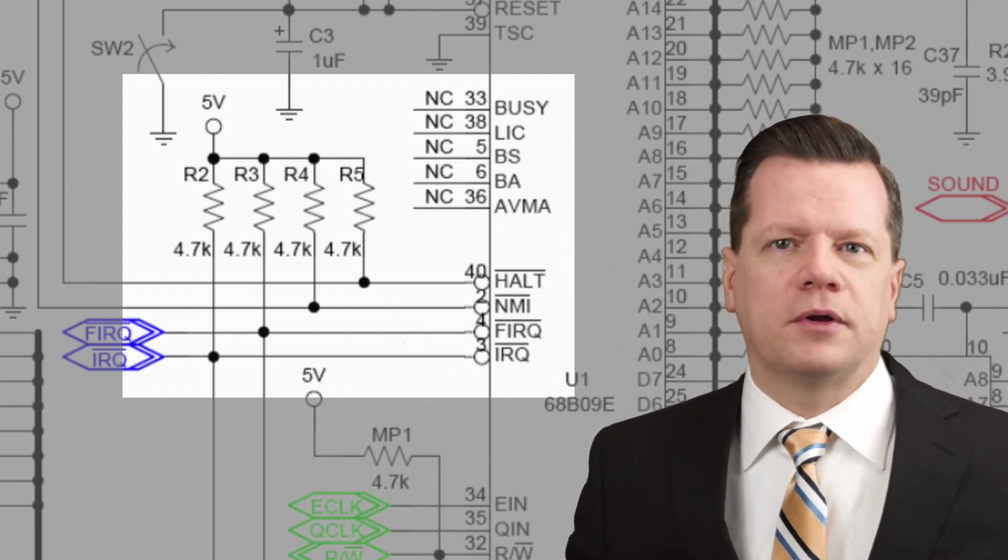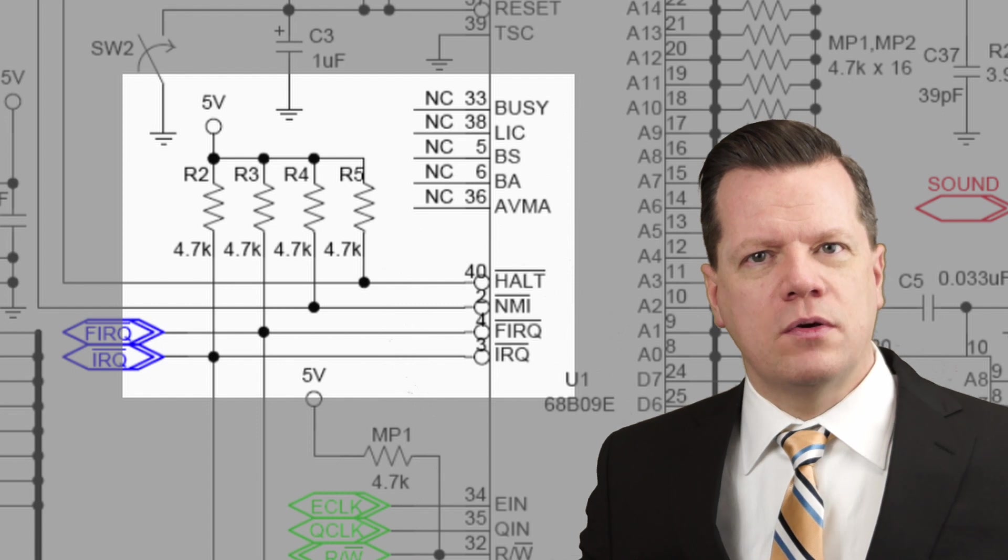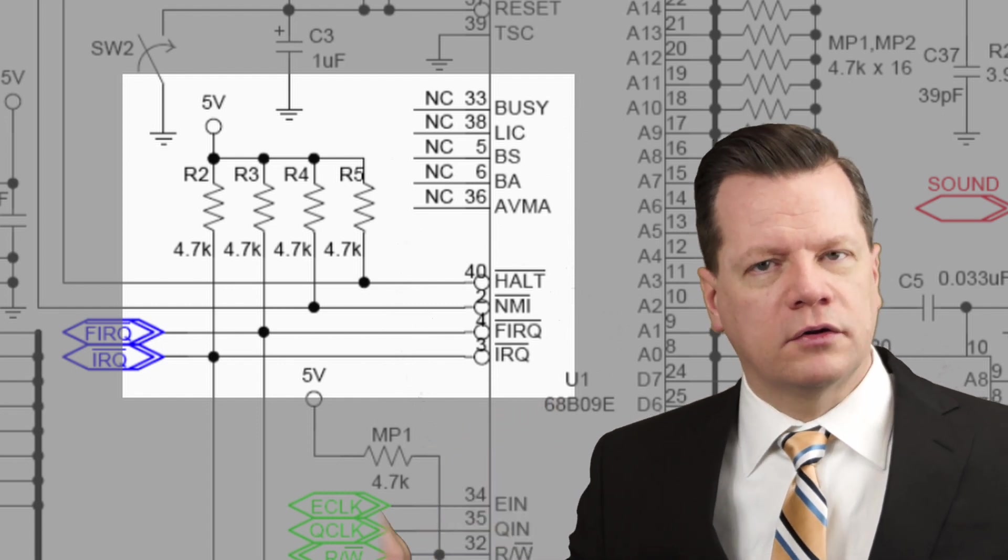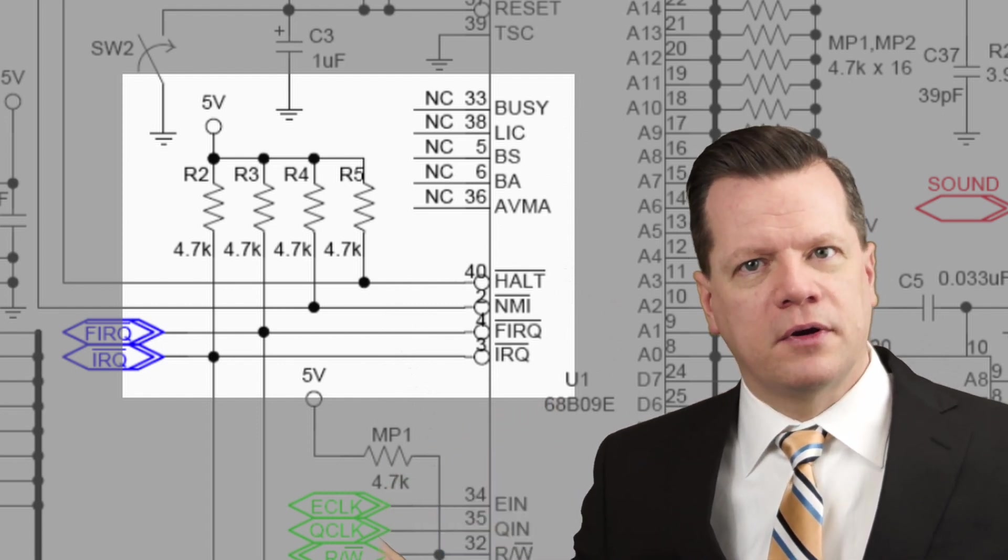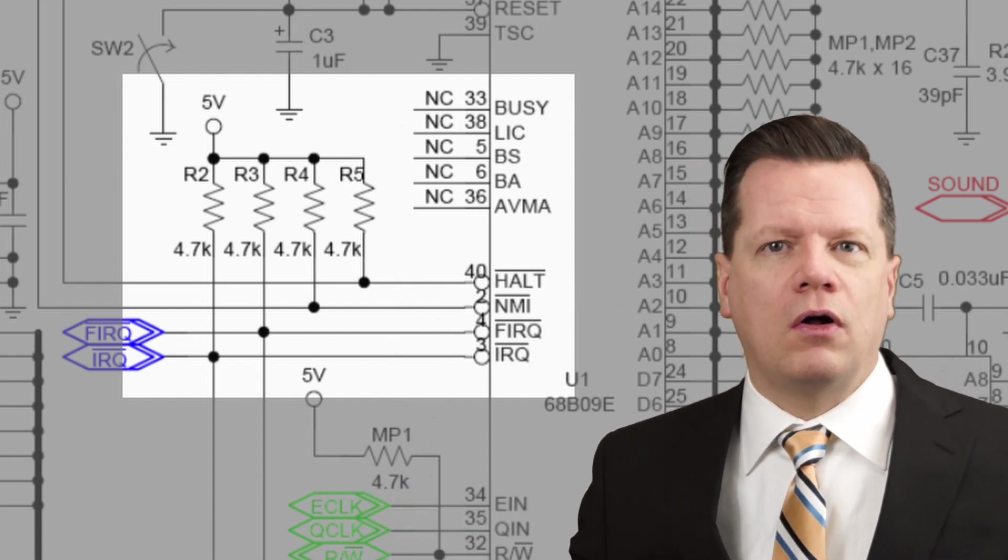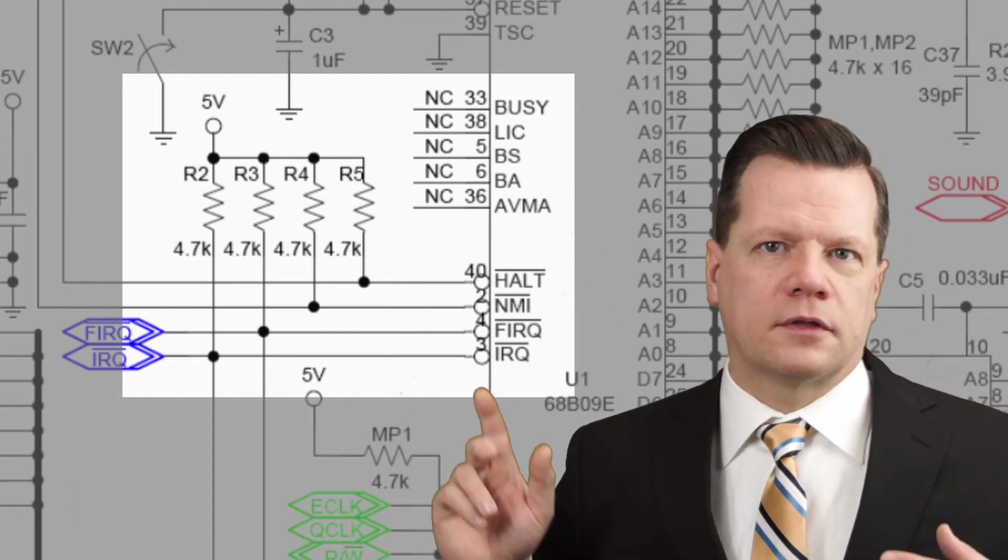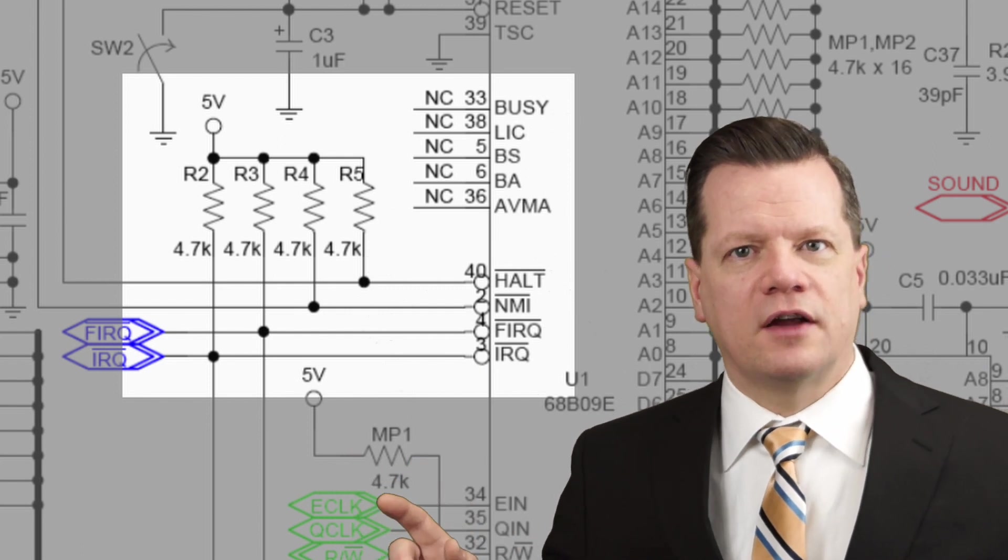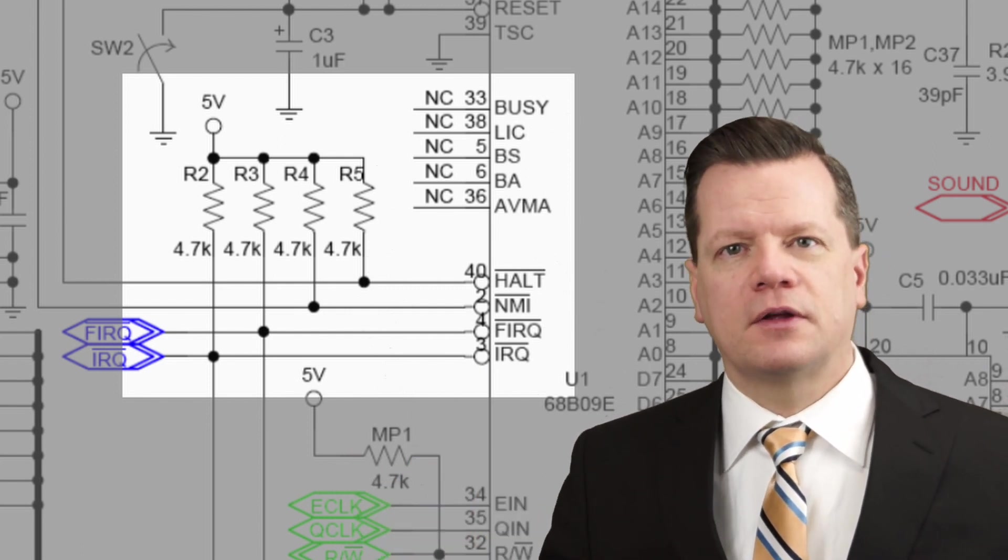On the RadioShack Color Computer 3, right next to the CPU, you can see that the HALT, non-maskable interrupt, interrupt request, and fast interrupt request lines are all tied to plus 5 volts. The pull-up resistors connected to each of these lines prevent any of them from falsely being triggered.